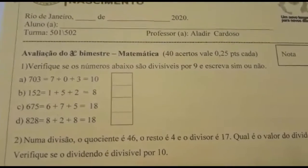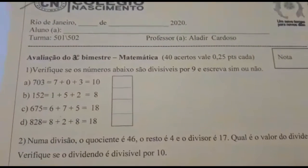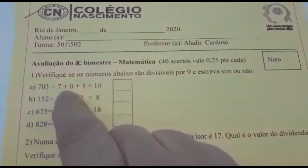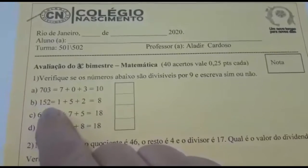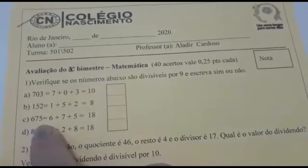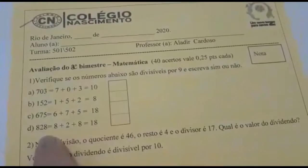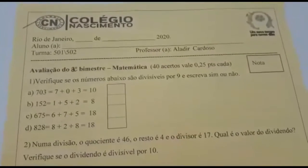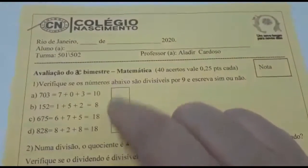Avaliação de segundo bimestre de matemática. Número 1: Verifique os números abaixo, se são divisíveis por 9, e escreva sim ou não. Vocês vão fazer a continha e vão ver. Letra A: 703 é igual a 7 mais 0 mais 3, que é igual a 10. Letra B: 152 é igual a 1 mais 5 mais 2, que é igual a 8. Letra C: 675 é igual a 6 mais 7 mais 5, que é igual a 18. Letra D: 828 é igual a 8 mais 2 mais 8, que é igual a 18. Vocês vão verificar se os números são divisíveis por 9 e escrever sim ou não nesses quadros.